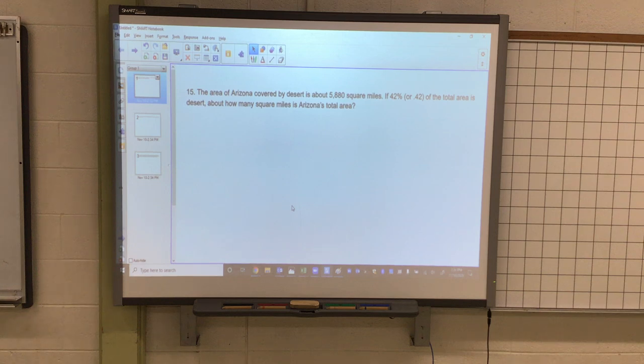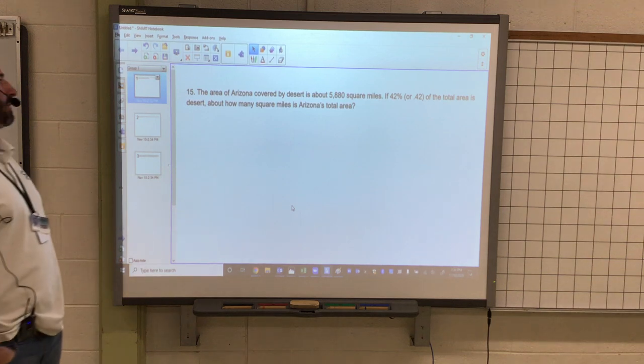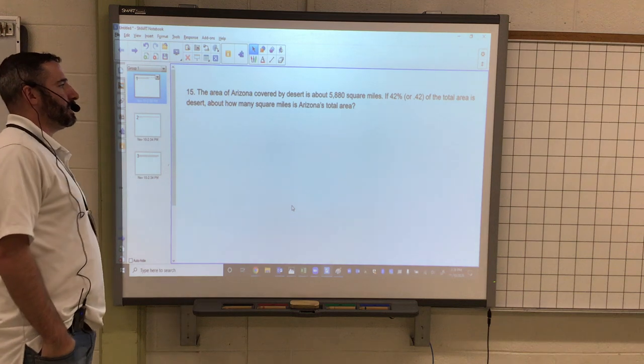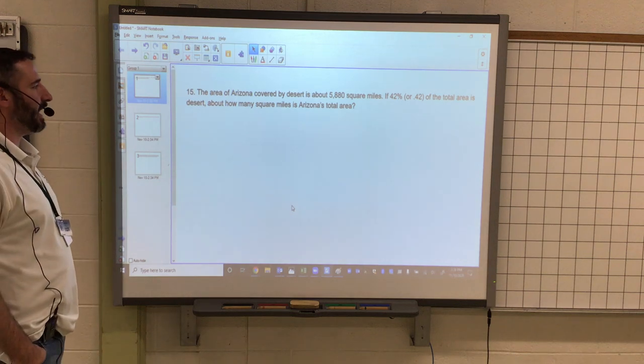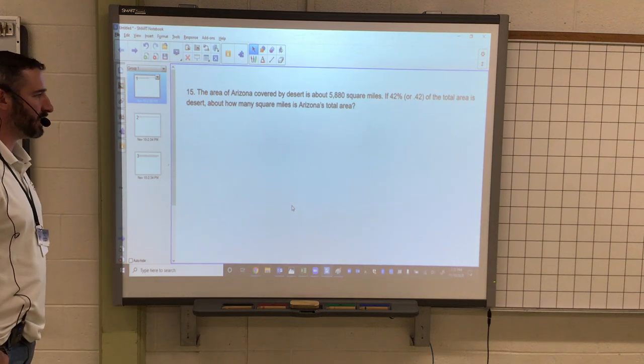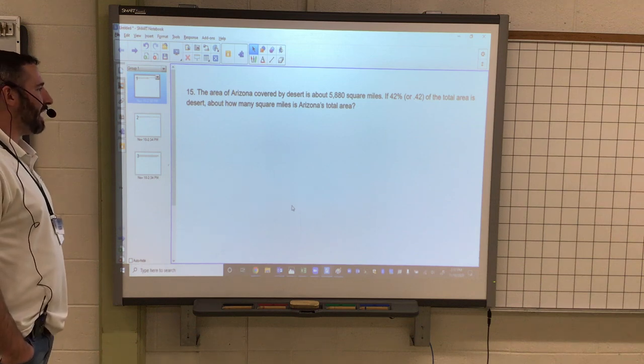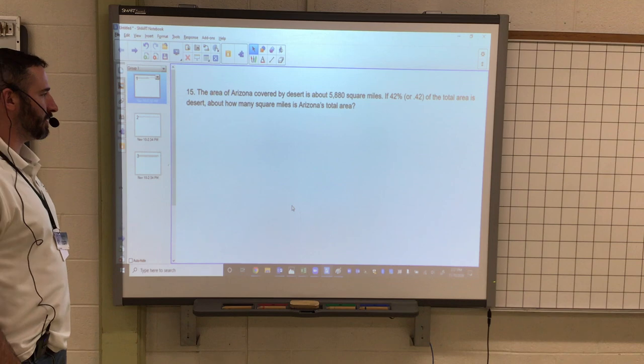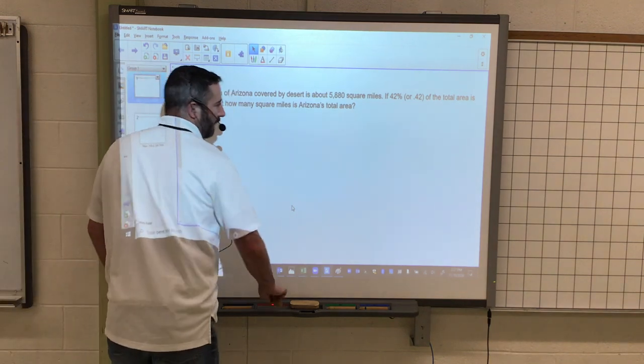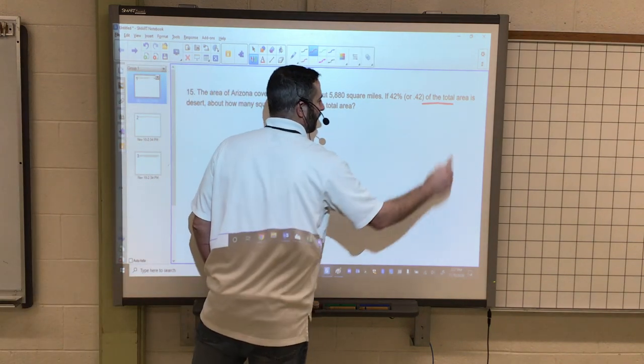So in number 15, the area of Arizona covered by desert is about 5,880 square miles. If 42 percent or 0.42 of the total area is desert, about how many square miles is Arizona's total area? So a key word here: of the total.